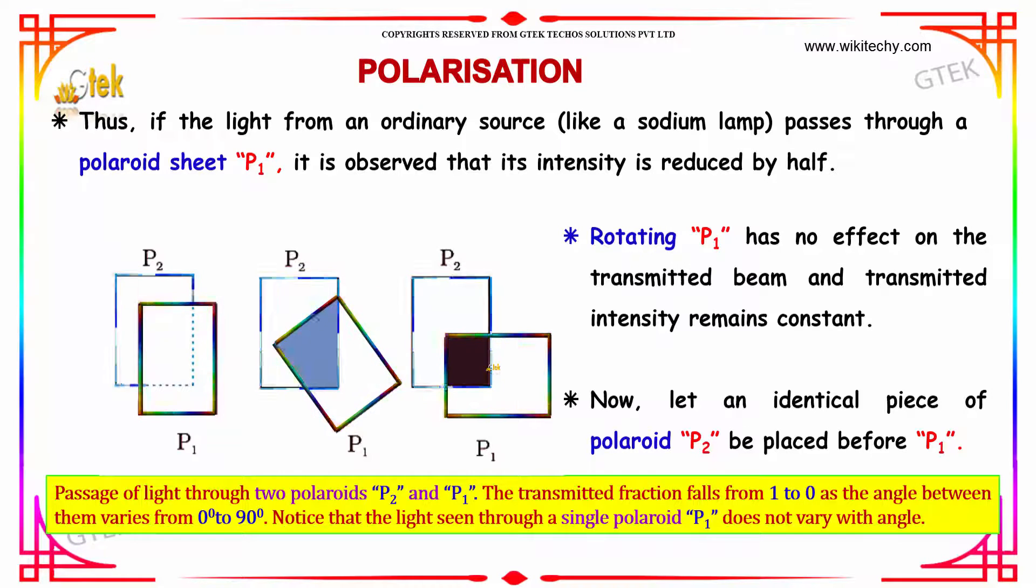Now, let an identical piece of polaroid P2 be placed before P1. You are able to see the passage of light through two polaroids P2 and P1.